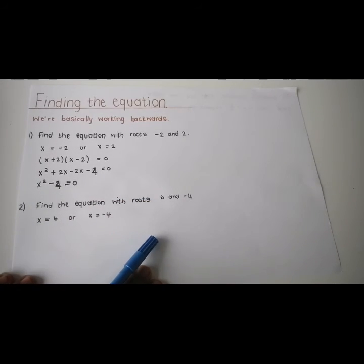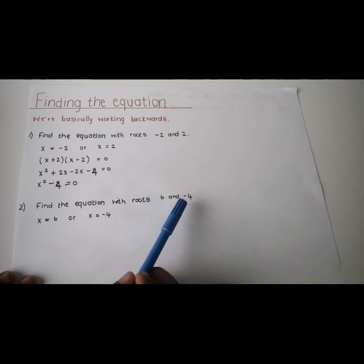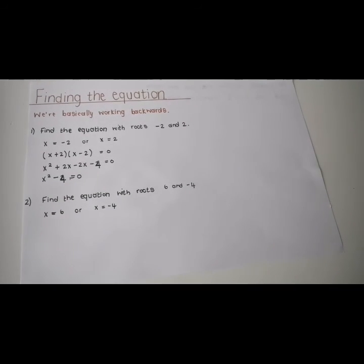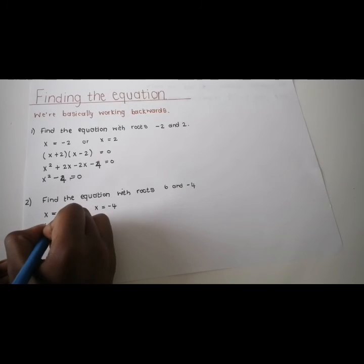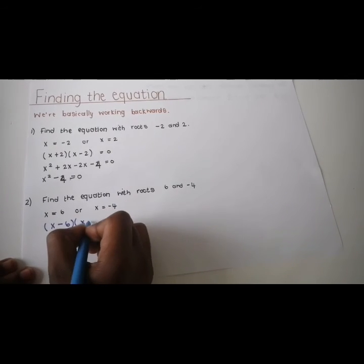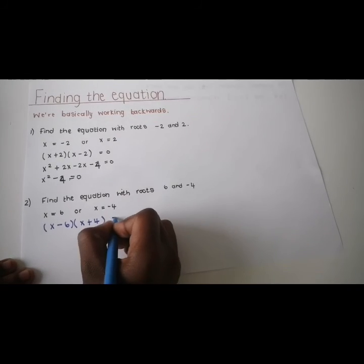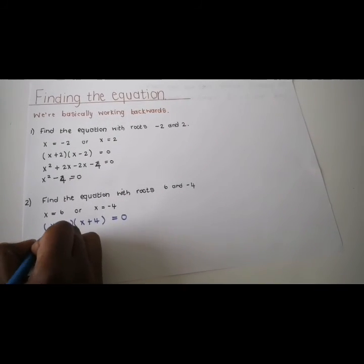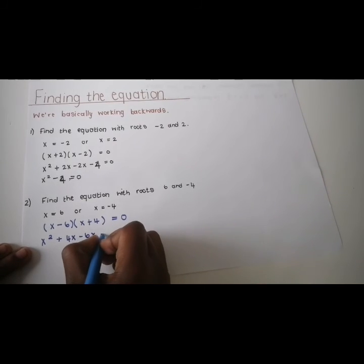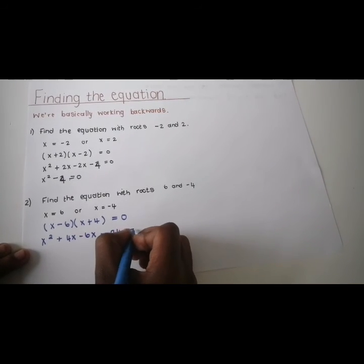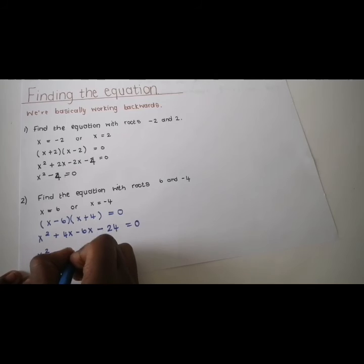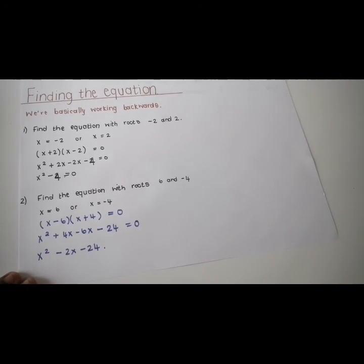Let's do one together. Find the equation with roots 6 and negative 4. So x equals 6 or x equals negative 4 means x minus 6 times x plus 4 equals 0. Multiply everything out: x squared plus 4x minus 6x minus 24 equals 0, which gives x squared minus 2x minus 24 equals 0. And there's your answer.